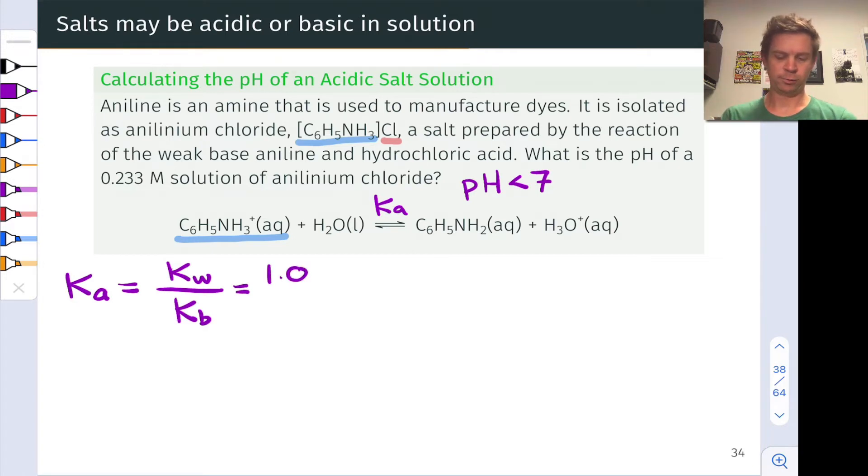And when you set about doing this, we have in the numerator 1 times 10 to the negative 14th power, the typical value for KW, and in the denominator we have KB for anilin, which turns out to be 4.3 times 10 to the negative 10th power. And we would look these values up to find them, of course. And this leads to a Ka value of 2.3 times 10 to the negative 5th power.